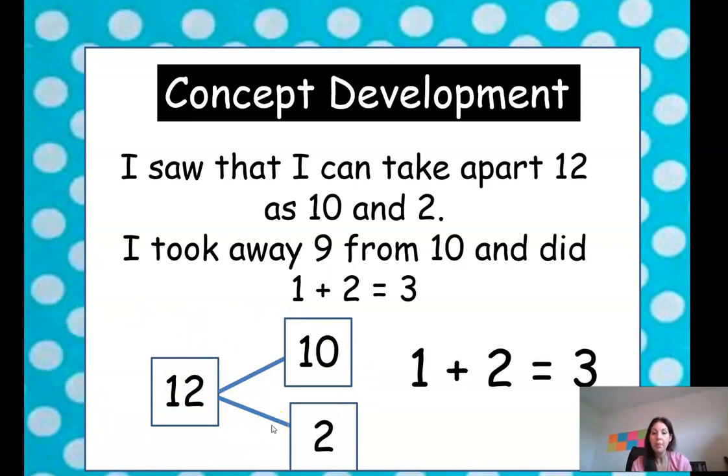You could make a number bond. So 12 can be separated into 10 and 2. And then you're going to take away 9 from 10, which equals 1. And then you still have 2 left. So 1 plus 2 equals 3.